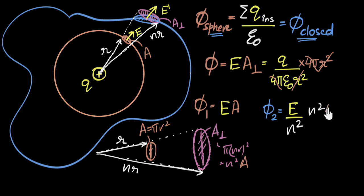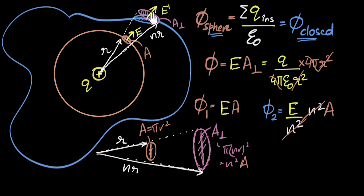Now you can see something absolutely beautiful: the N squared cancels out. The electric field goes down as one over N squared, but the perpendicular area increases by N squared, so their product — the flux — stays the same. As a result, the flux through the outer piece is exactly equal to the flux through the sphere piece, both equal to E times A. This means the flux through the entire sphere is the same as the flux through the whole surface, so the flux through the closed surface is Q divided by epsilon naught. Hence proved.